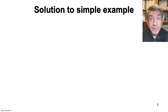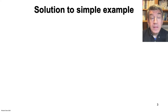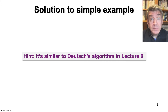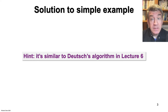If you did not come up with a quantum circuit, I'd like to urge you to try again. The solution is a pretty simple circuit, and it's similar to the very first quantum algorithm that we saw for Deutsch's problem back in lecture 6. Please pause the video now and give it another shot.